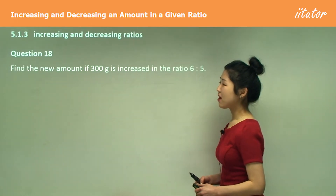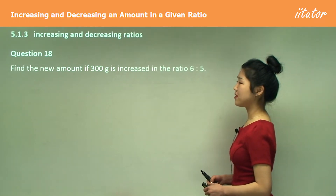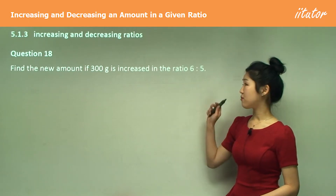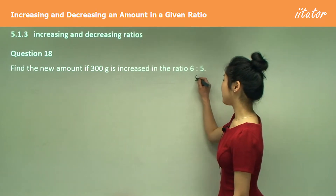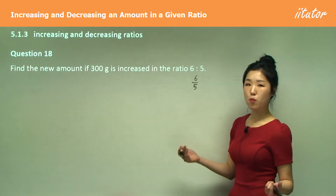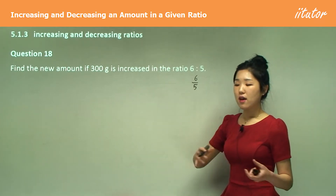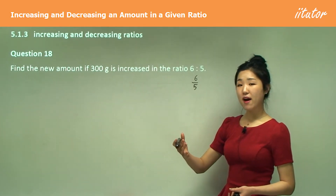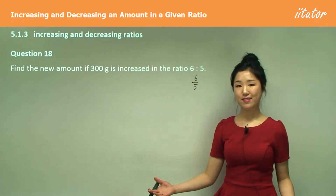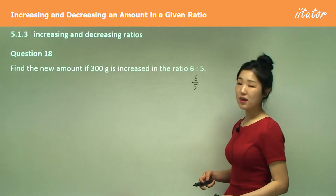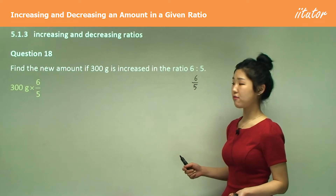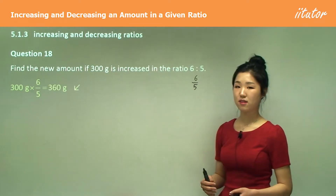Starting with question 18: find the new amount if 300 grams is increased in the ratio 6 to 5. Now remember this is the same as a fraction — 6 over 5. Since 6 over 5 is 1-point-something, multiplying by it increases the number. So all you need to do is multiply 300 grams by 6 on 5, which gives you 360.